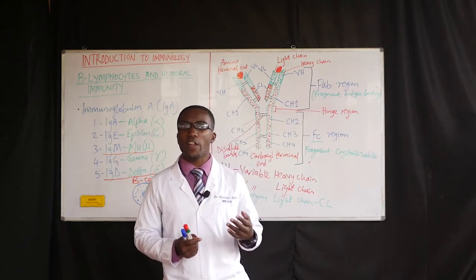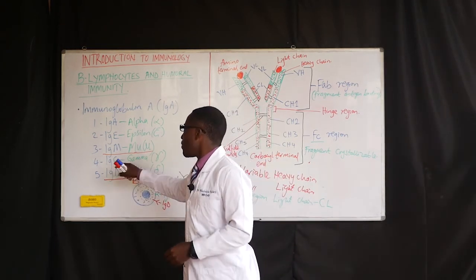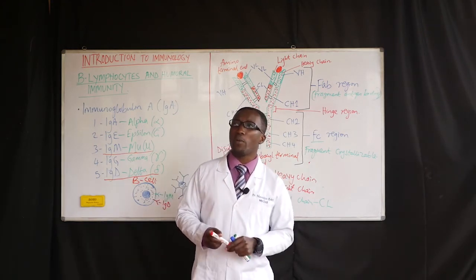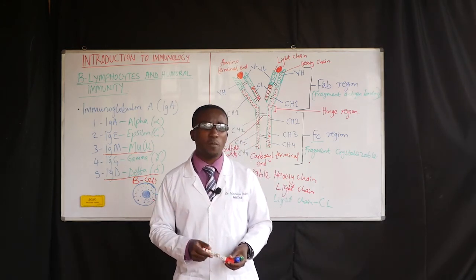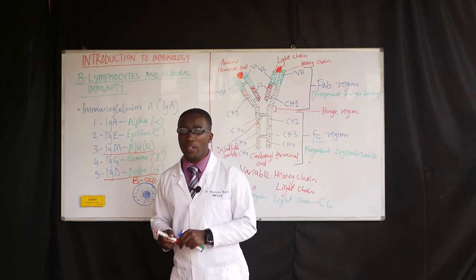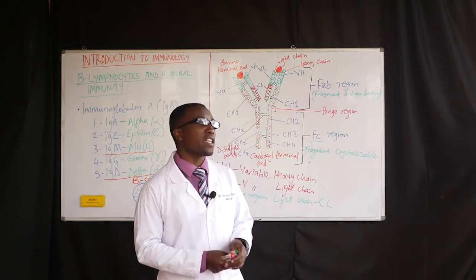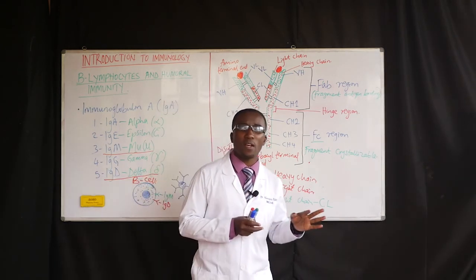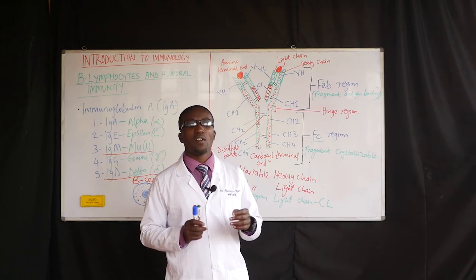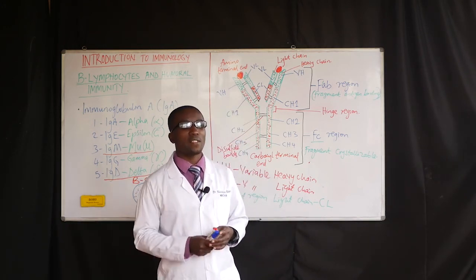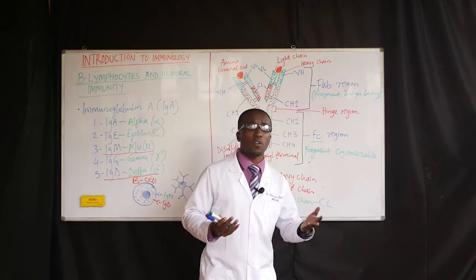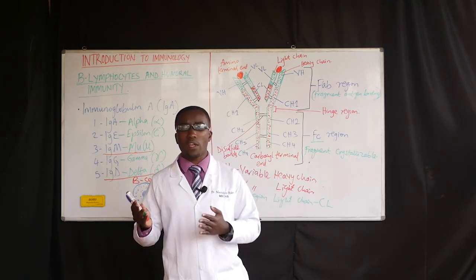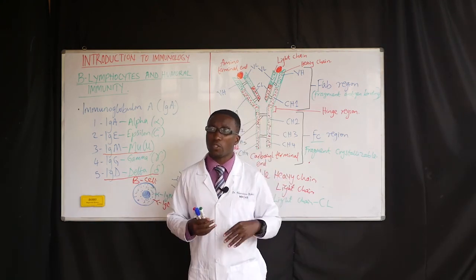In order for immunoglobulin G to be secreted or produced by plasma cells — which are derived from B-lymphocytes — we need T-helper lymphocytes to come in. That's why, when a condition is chronic, we tend to see high titers of IgG in association with T-lymphocytes and B-lymphocytes. We tend to see high titers of IgG in most chronic illnesses.